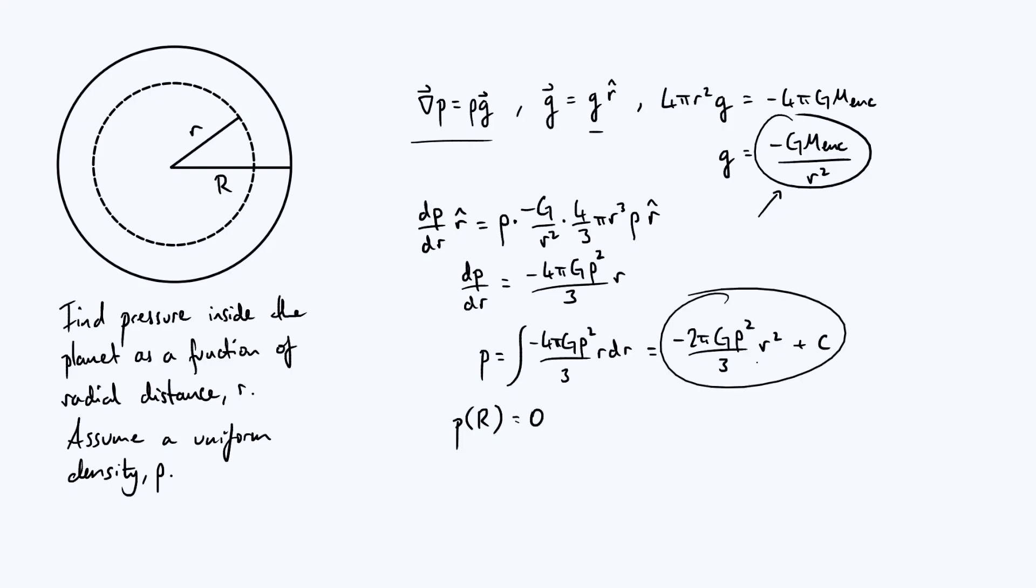So you're going to set all of that stuff that I've just circled to zero when small r equals big R. And then you reach the conclusion that c is just positive 2πGρ² over 3 times capital R².